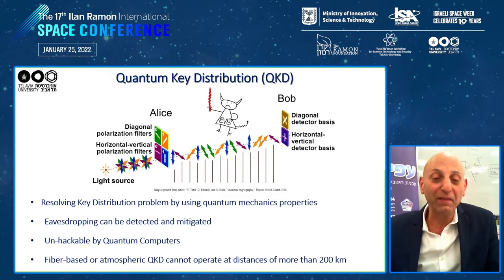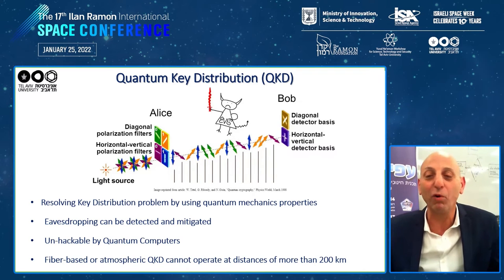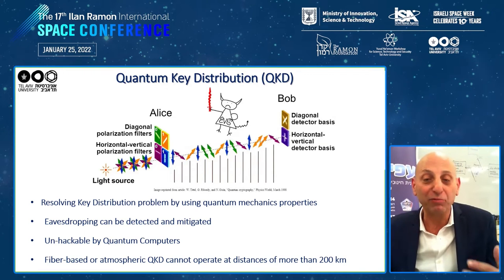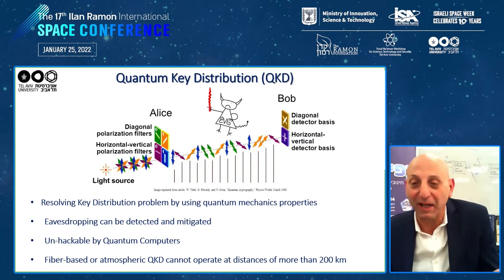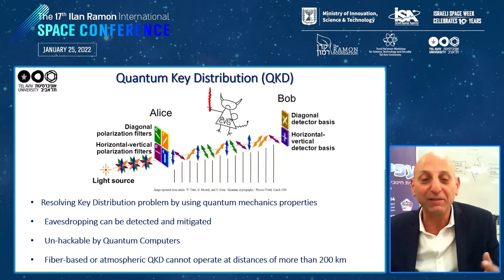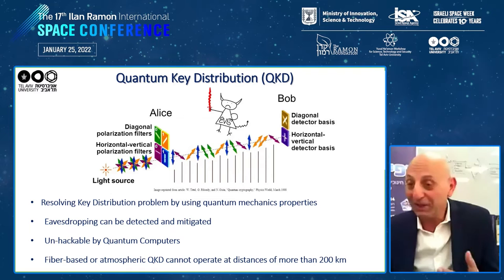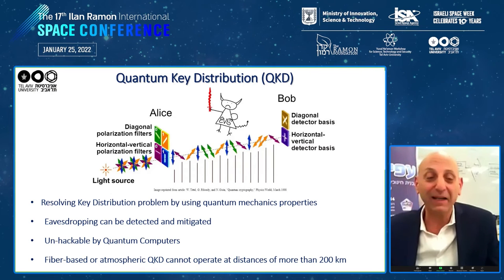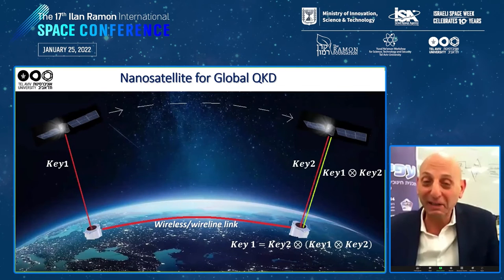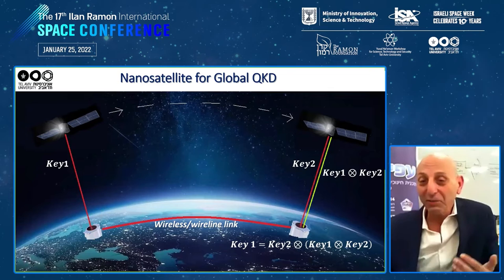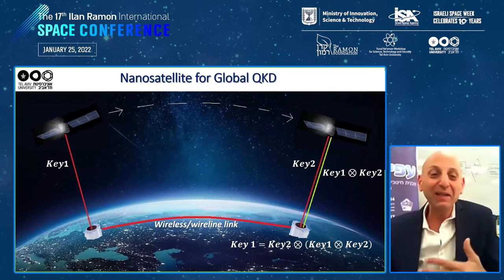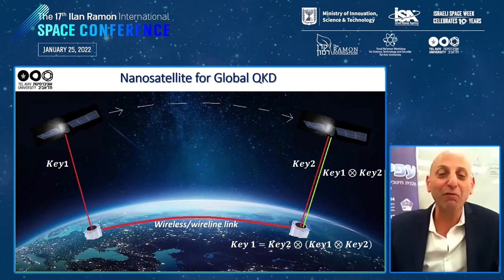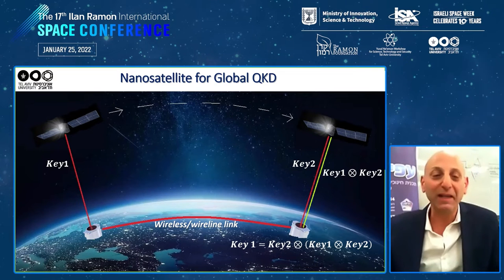It is worth noting that fiber-based QKD cannot operate at distances of more than 200 kilometers due to fiber attenuation. Optical transmission in the atmosphere is another option, but limited line of sight due to the curvature of Earth, as well as the density of the atmosphere, limits its range. So satellite-based QKD, where the quantum signal travels mostly through vacuum, is the only practical solution for establishing a global quantum network.